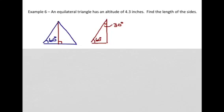And let's see, we know that the altitude is 4.3 inches. So we want to find the length of the sides and here's one side. That's our hypotenuse of this triangle but it's the same length as all three sides on the equilateral triangle.